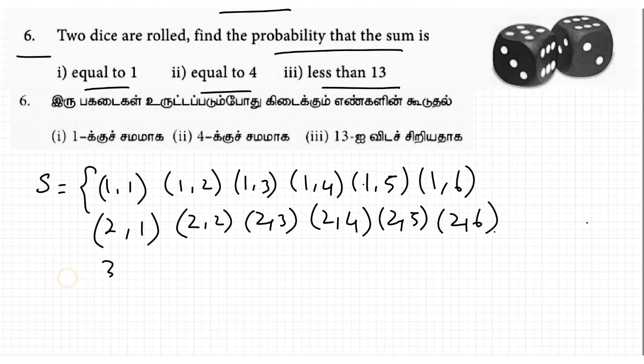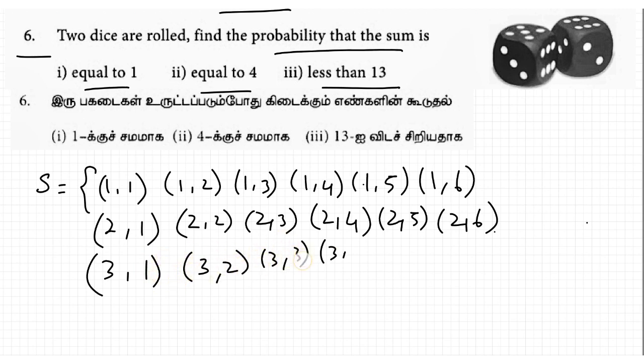When the first die shows 3 and second die shows 1: (3,1), then (3,2), (3,3), (3,4), (3,5), (3,6).